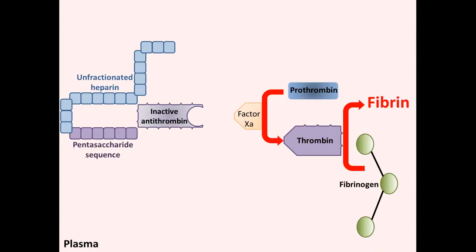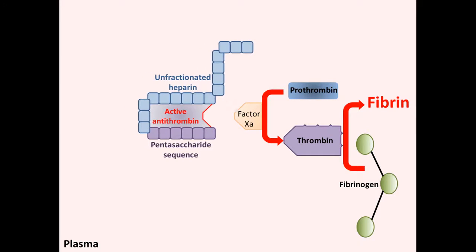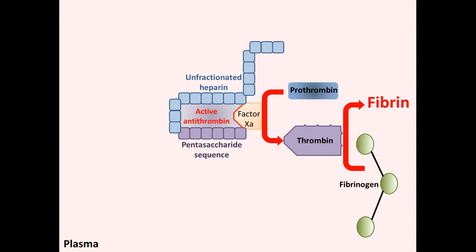Within the blood plasma, heparin by itself does not have any anticoagulant activity. Unfractionated heparin binds to the inactive antithrombin, and this binding activates it through a conformational change, which then allows the active antithrombin to bind and interact with Factor Xa.